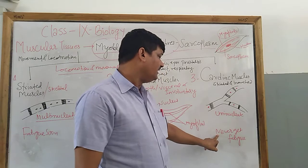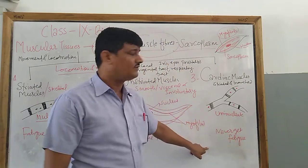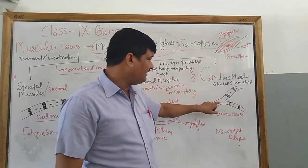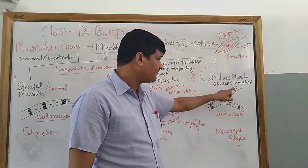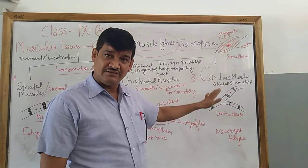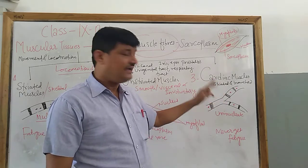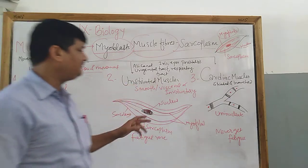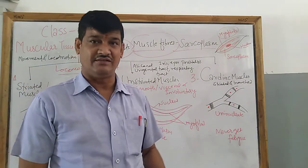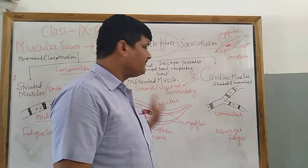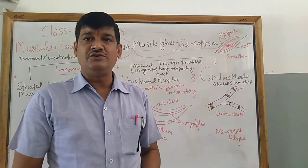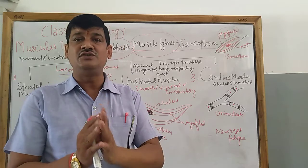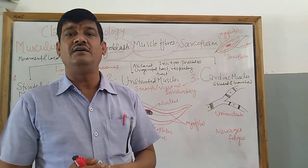Cardiac muscle is known as a tireless or fatigueless muscle — it never undergoes fatigue. These cardiac muscles have branching and bands, and they are a single muscle type which is branched and intermediate between striated and unstriated muscles. This concludes the topic of muscular tissues in animal tissues. Thanks for watching.